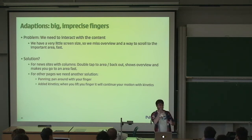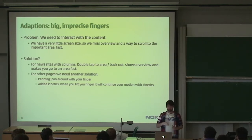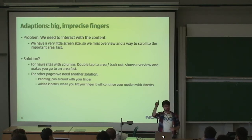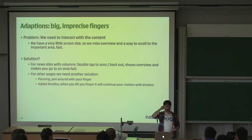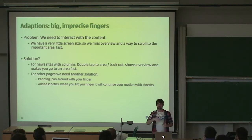Still, double-tap doesn't solve everything — there are pages without zoomable areas, maybe just text. So we also want to be able to pan around fast. We make it possible to pan around with your finger, like on Android or on the iPhone. And if you pan in a bigger area with a little force, it will start doing kinetic scrolling — making it scroll faster so you can easily get to the points you want to see.